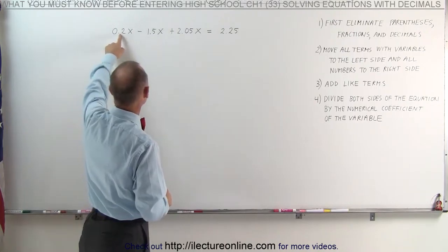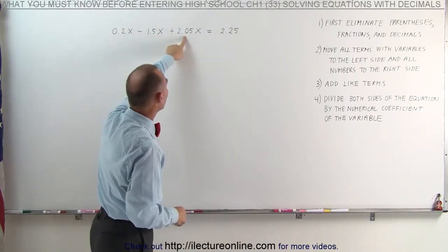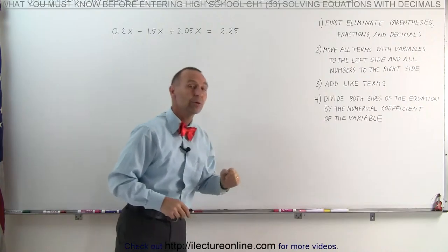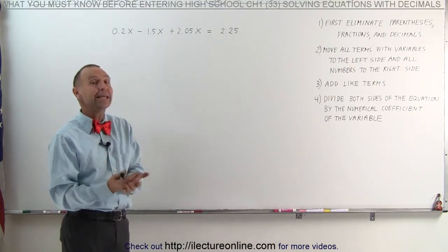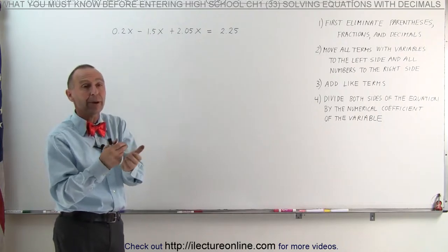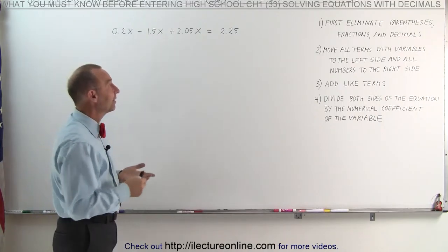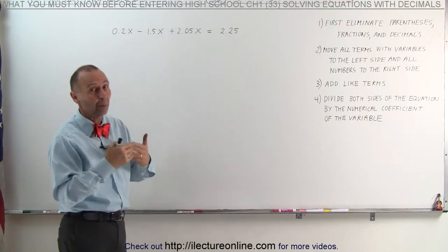Here we have a number with one decimal place, one decimal place, two decimal places, and two decimal places. So we look for the number that has the greatest number of decimal places, and then we can eliminate that by multiplying that number by a one with the same number of zeros. In this case, a one with two zeros is the number 100.